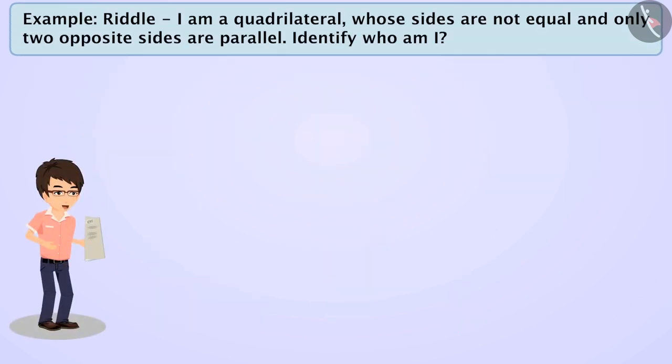Next example: Aman finds a puzzle in a letter. In the puzzle, it was written that I am a quadrilateral whose sides are not equal and only two opposite sides are parallel. Identify who am I? Let's solve this puzzle.